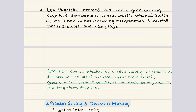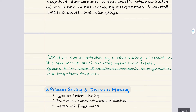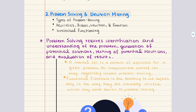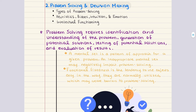Aging brings about many changes in cognition, and cognition can be affected by a wide variety of conditions — including actual problems with the brain itself, genetics or chromosomal conditions, metabolic derangements, and even long-term drug use. With that, we move into our second objective: Problem Solving and Decision Making.